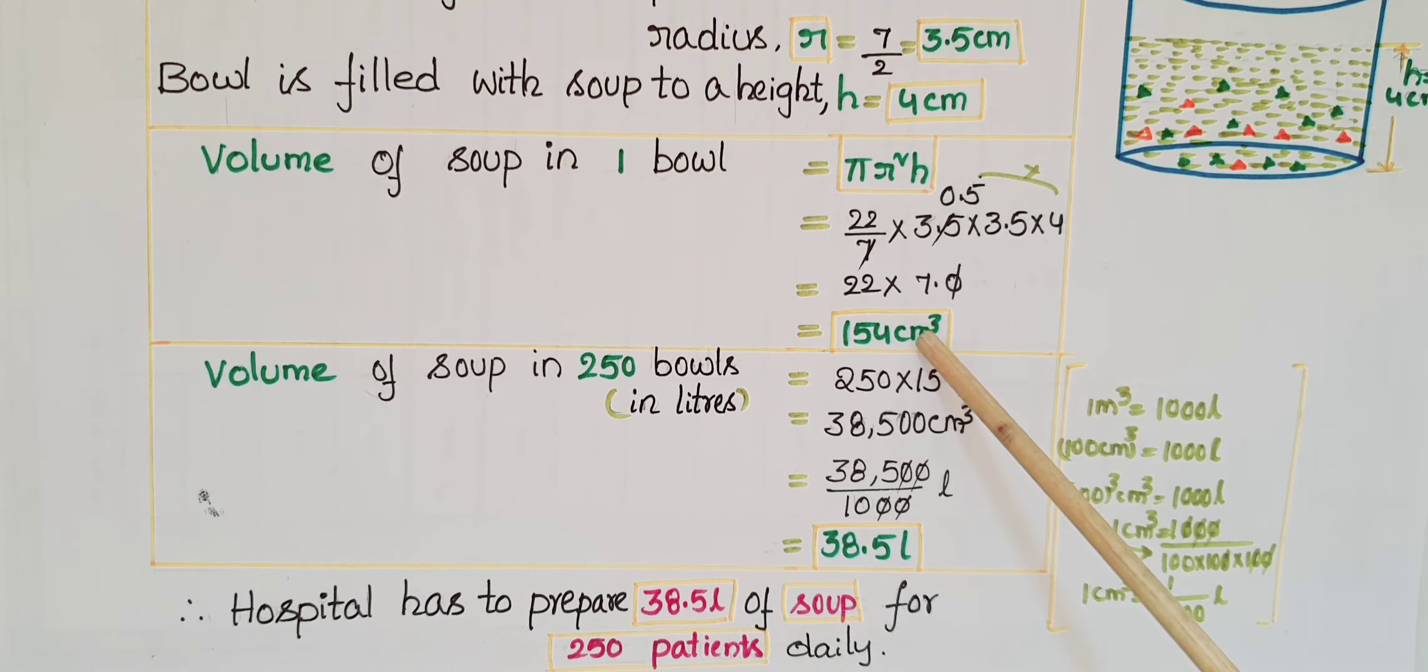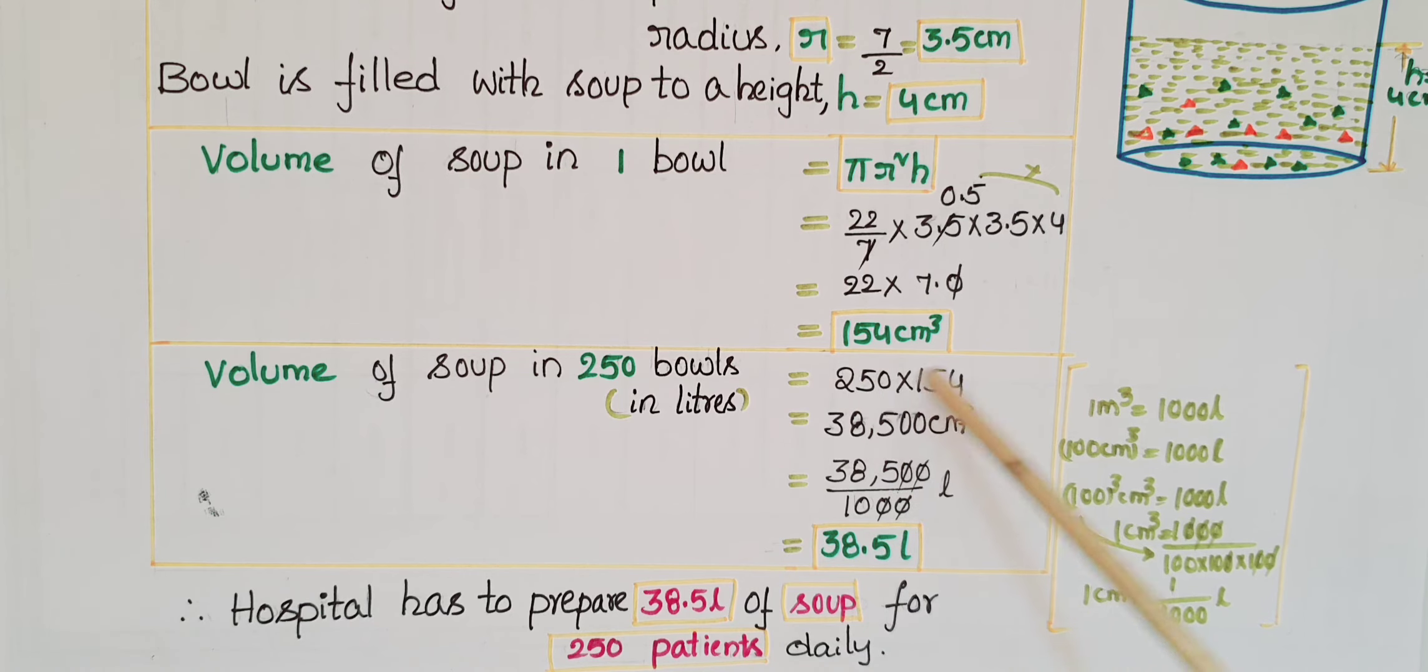The soup is in liters, so we have to convert this centimeter cube into liters. We know that 1 centimeter cube is equal to 1 by 1000 liters, so divide this number with 1000, that is 38,500 by 1000 liters.